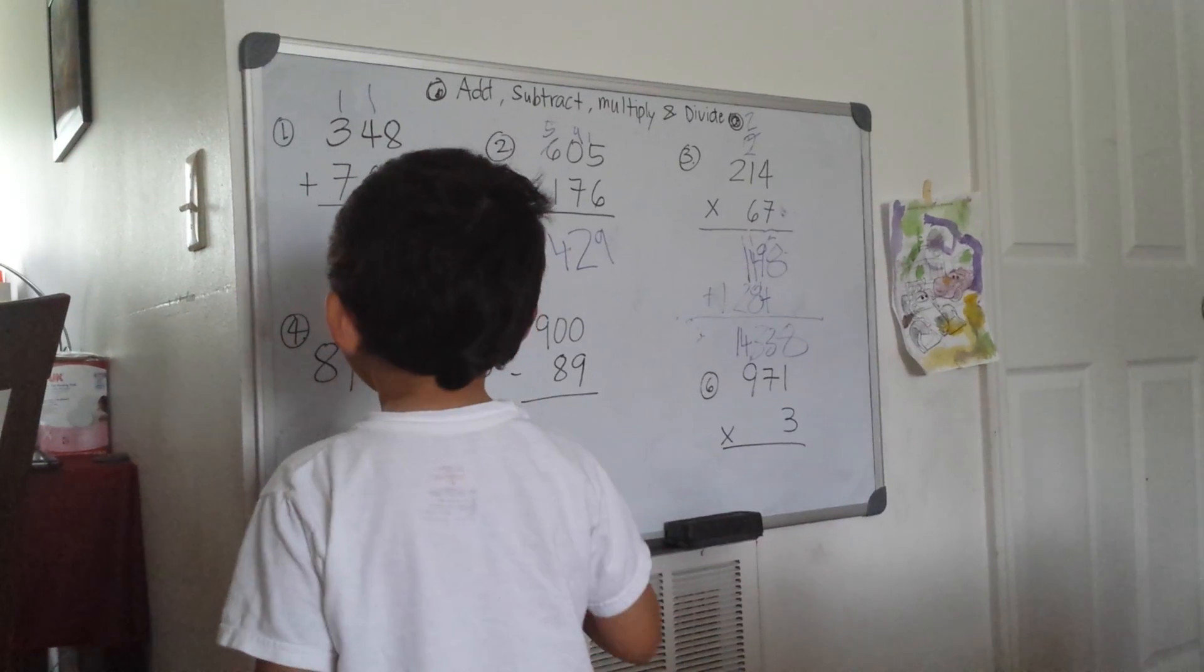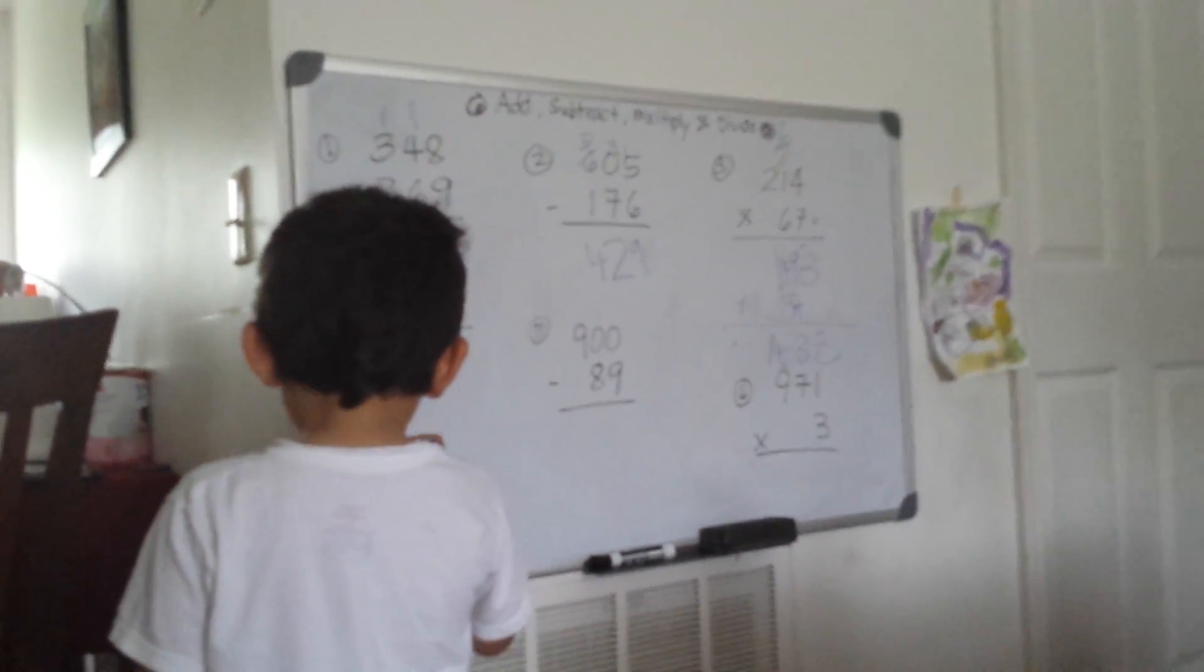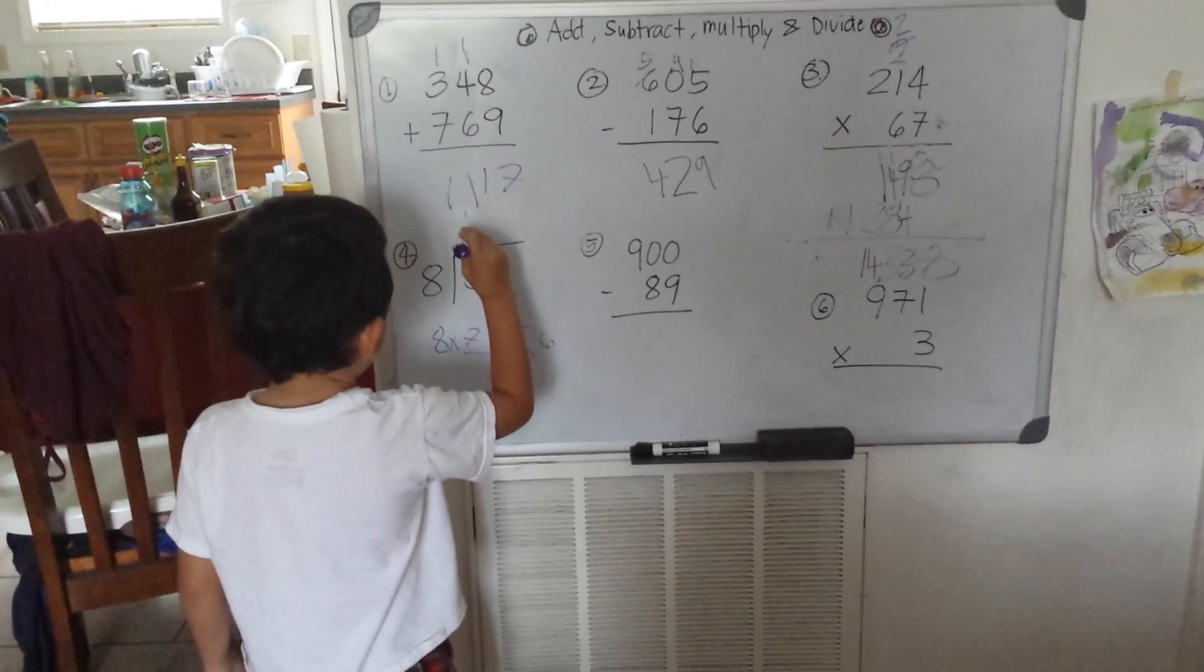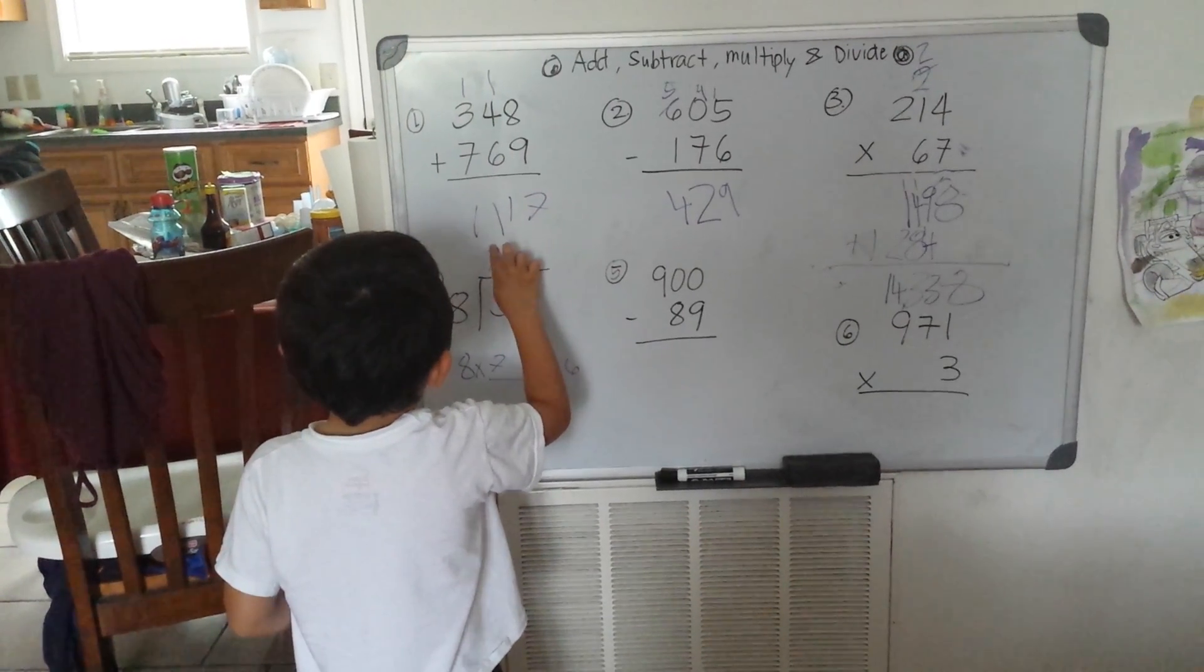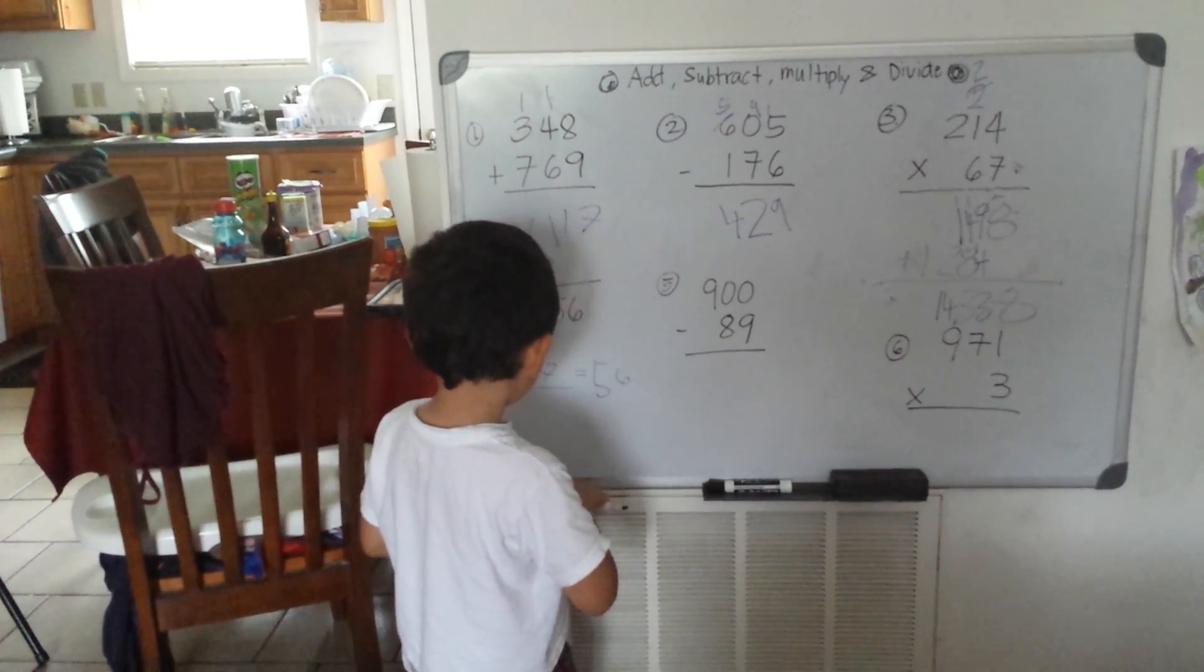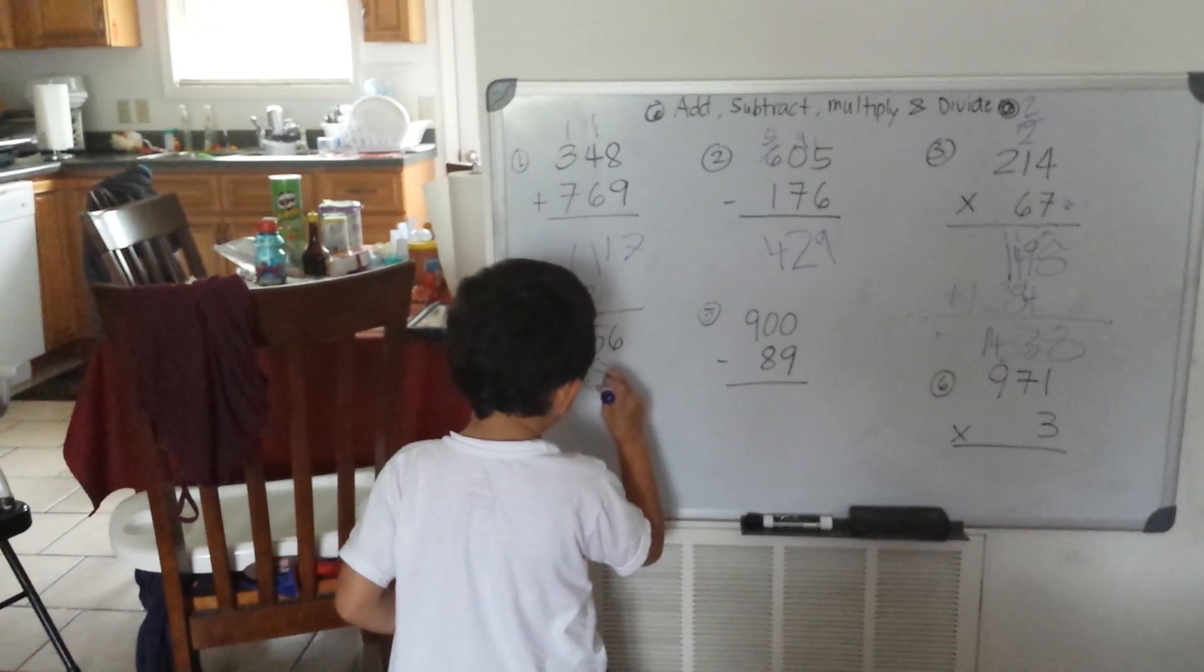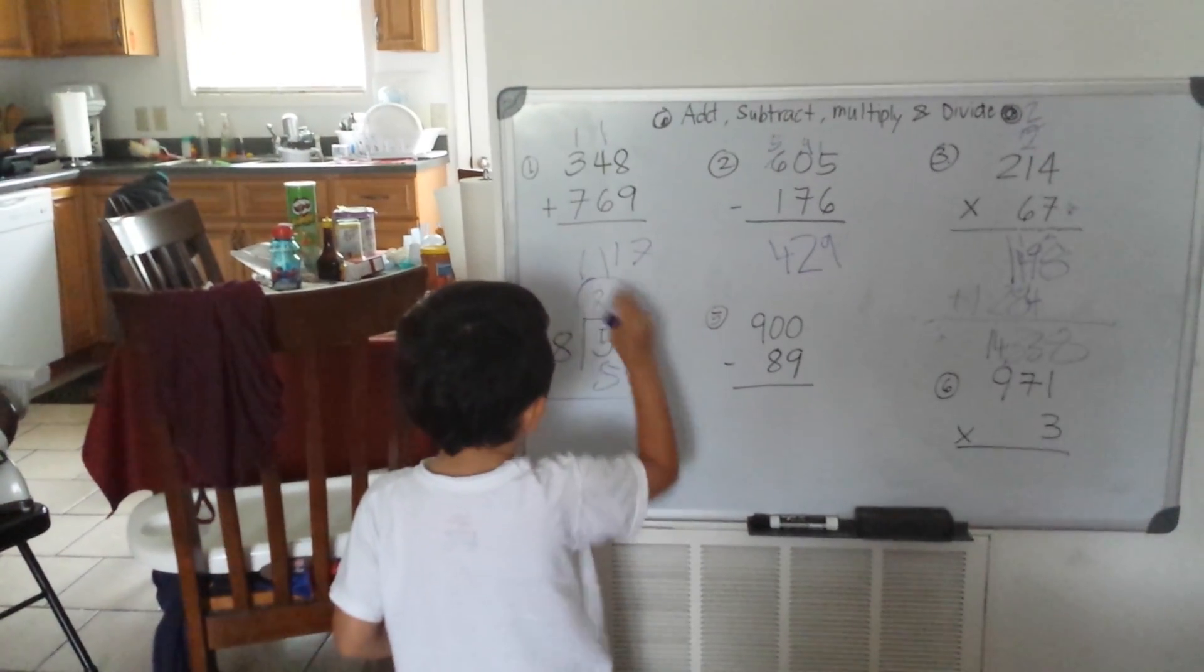Number 4: 56 divided by 8. 8 times 7 equals 56. So the answer is 7 with no remainder.